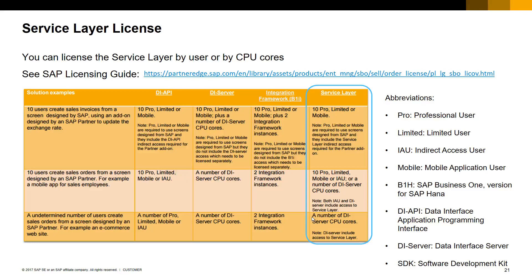If the customer only has 5 professional licenses, for example, they will require to buy either 5 indirect access user licenses or a number of DI API Server CPU cores. If we take the example of a solution where an undetermined number of users create sales orders from a screen designed by an SAP Partner connecting to SAP Business One via Service Layer, the best option will be to buy a number of DI Server CPU cores instead of buying indirect access limited or professional licenses if they are not required for other functionality in SAP Business One. You can get this slide as well as more detailed information on SAP Business One licenses in the Partner Edge Licensing Documentation link provided in this slide.